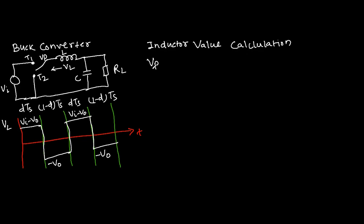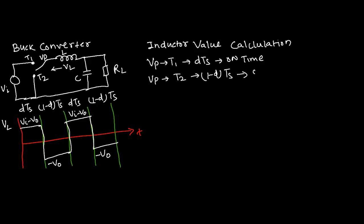The pole VP connects to T1 during the time of D·Ts, and VP connects to T2 during the time of (1−D)·Ts. D·Ts means the on-time of your converter, and (1−D)·Ts is the off-time of your buck converter.